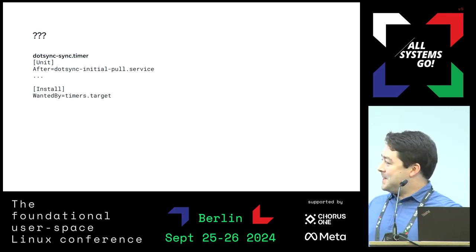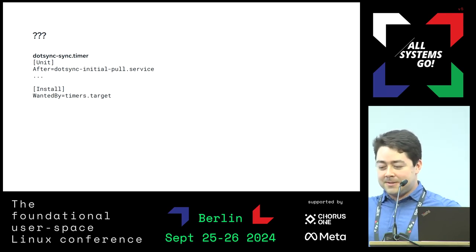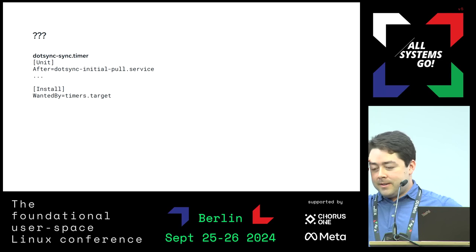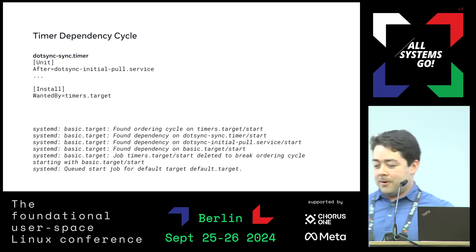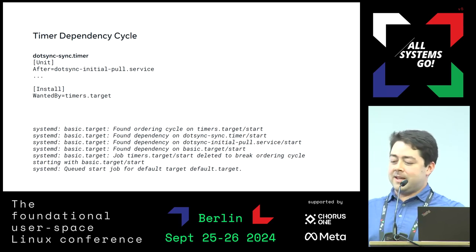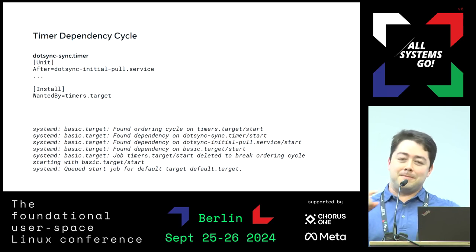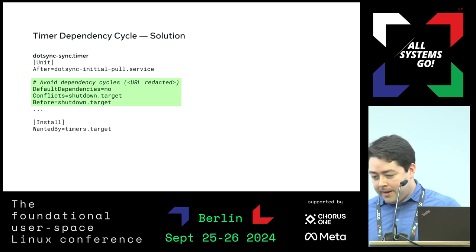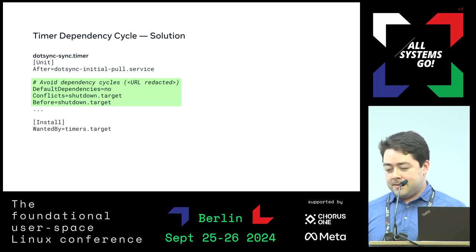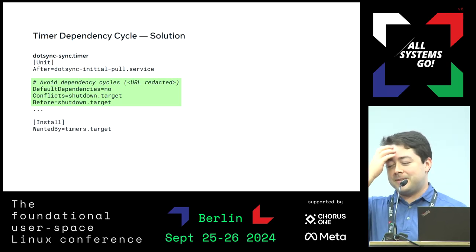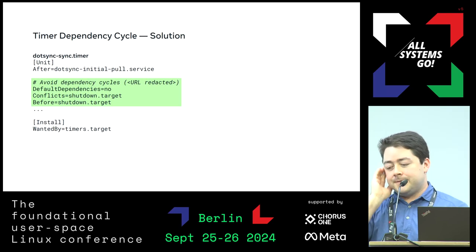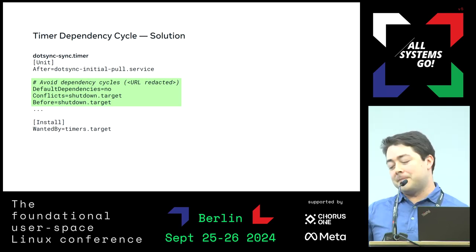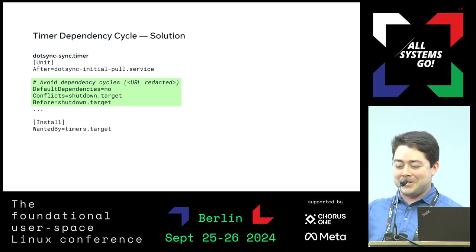Here's an example: we wrote a timer for the dot.sync service where we didn't want the timer to start until after we had done the initial setup. The way we wrote it caused an ordering cycle when the user instance starts up — it's surprising, but it happens because of default dependencies that things have. The way we ended up solving it was turning off DefaultDependencies and then manually adding back the shutdown.target dependencies. The other equivalent approach would have been to do this on the service we're ordering after. We've run into this with a couple different timers, so we now have a documentation page about it and a block of config copied into a bunch of timers.